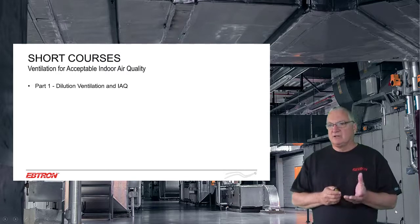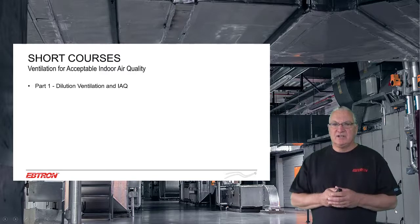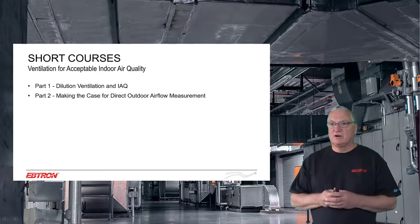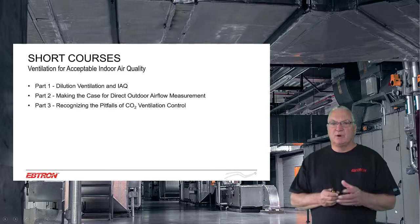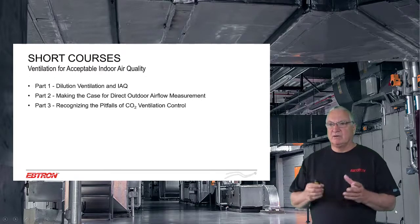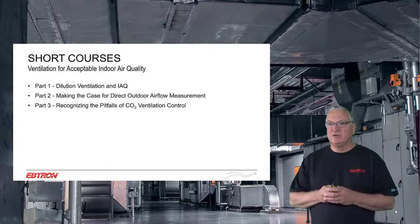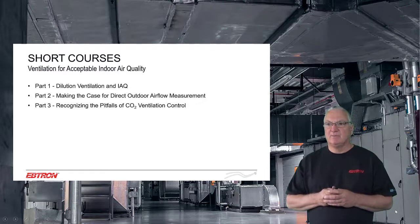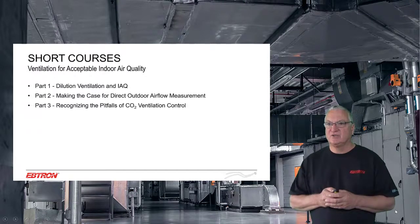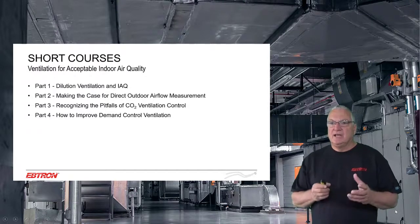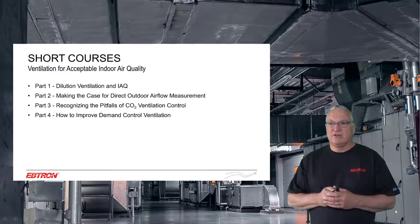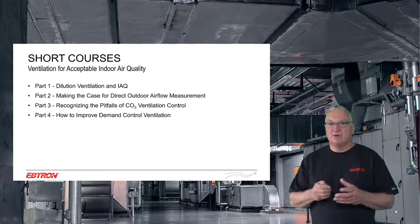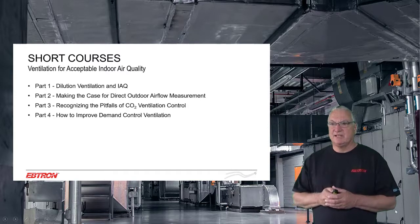In part one, we're going to talk about dilution ventilation and IAQ. In part two, we're going to talk about making the case for direct outdoor air flow measurement. In part three, we're going to be talking about CO2 and particularly recognizing some of the pitfalls of CO2 ventilation control. In part four, we're going to talk about how to improve demand control ventilation, including CO2 DCV, but also population-based DCV.